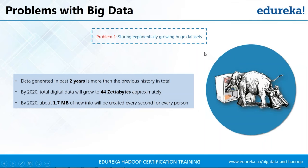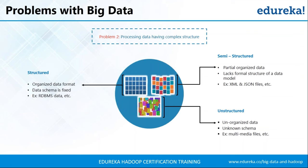A distributed file system would be a better way to store this huge data, saving a lot of money by storing data on commodity hardware instead of spending money on high-end servers. Now storing is a problem, but it's just one part. The data is not only huge but also present in various formats — unstructured, semi-structured, and structured. You not only need to store this huge data but also need a system to store this variety of data generated from various sources. Additionally, hard disk capacity is increasing but disk transfer performance and speed are not increasing at the same rate.